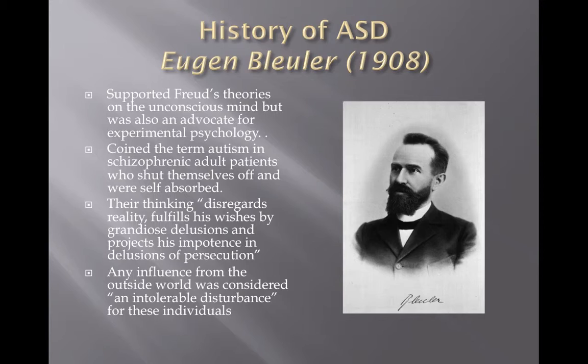Now we're going to get into the history — where it all started and how it went from how it was defined in the 1900s to how it's defined now. Eugen Bleuler was the first one to look at individuals with these autistic traits. He was looking at schizophrenic patients and came up with a subgroup that he called autism — he actually coined the term. These individuals tended to be withdrawn, shut themselves off, and he considered them self-absorbed, with any outside influence being an intolerable disturbance. As we know, individuals with autism don't have schizophrenia, but Bleuler was the first person to coin the term autism and identify these individuals.